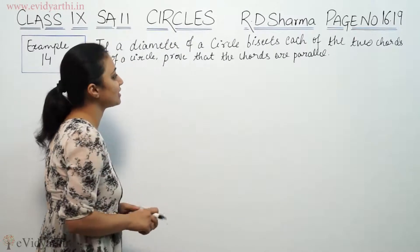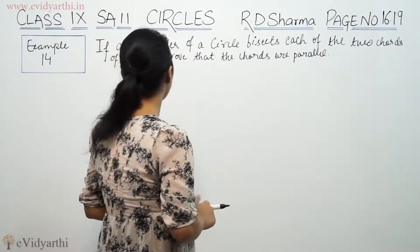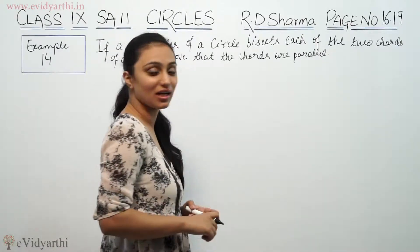This says, if a diameter of a circle bisects each of the two chords of a circle, prove that the chords are parallel.